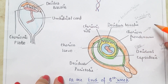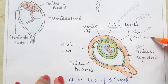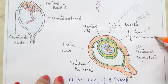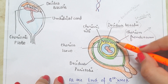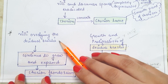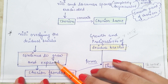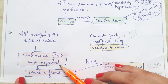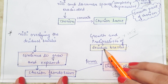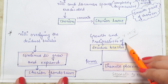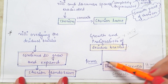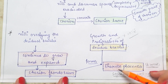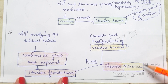The villi present over the decidua basalis continue to grow and expand, and this structure is known as chorion frondosum — the fetal component of the placenta. In the case of decidua basalis, growth and proliferation occur, resulting in the formation of a discrete, separate, and well-defined placenta.